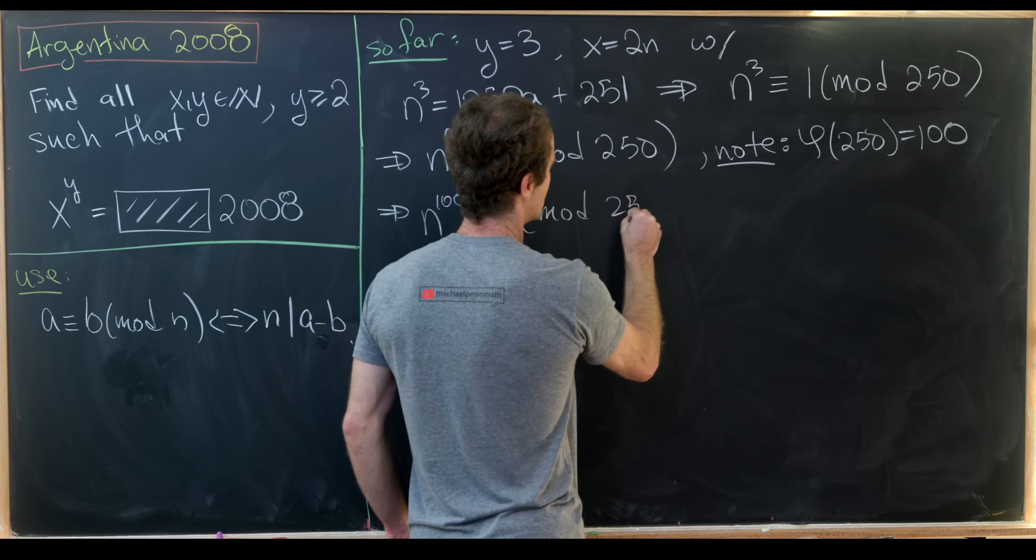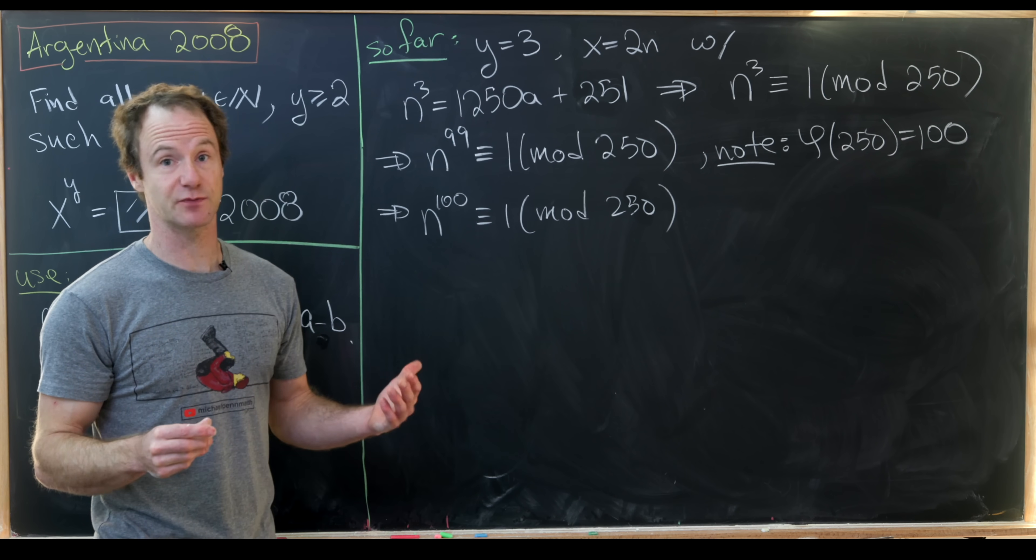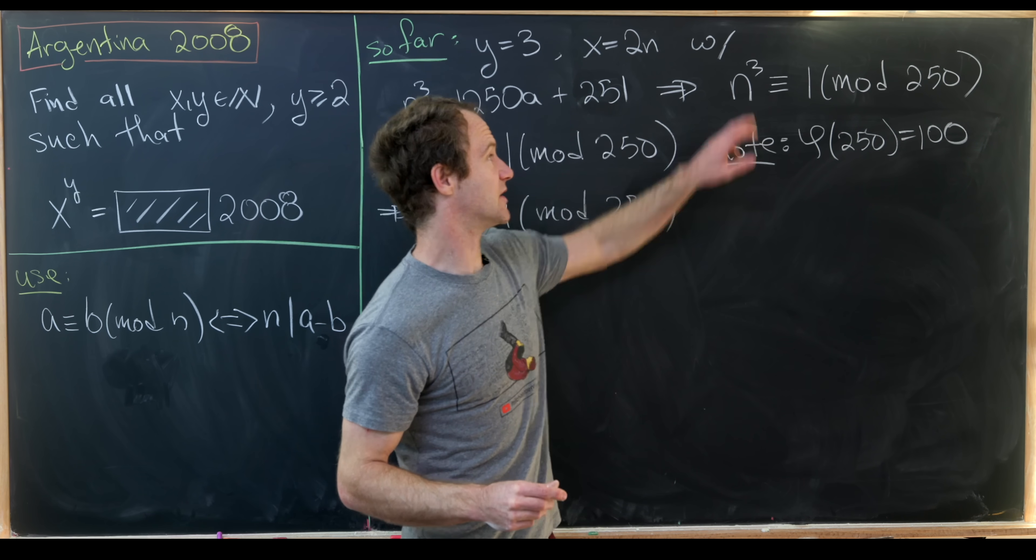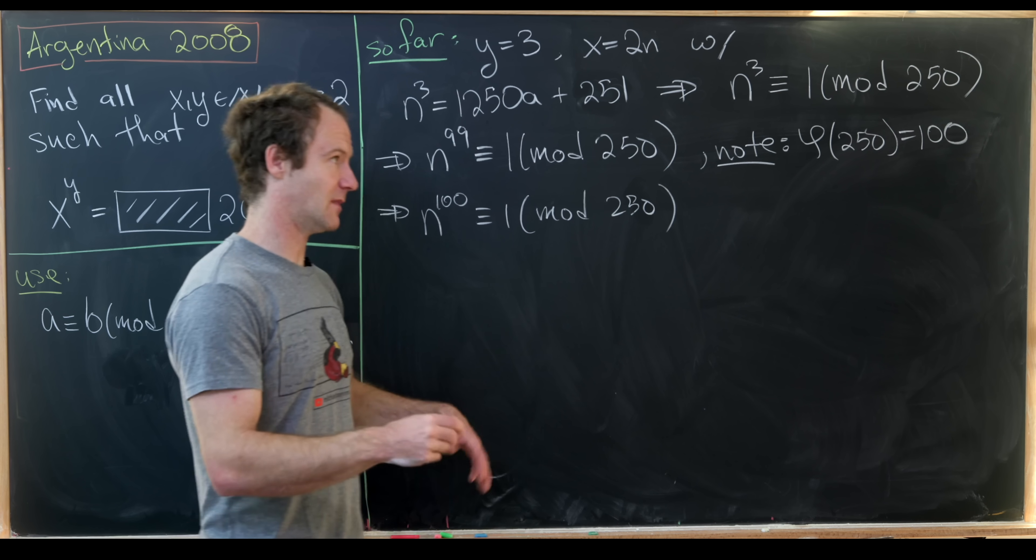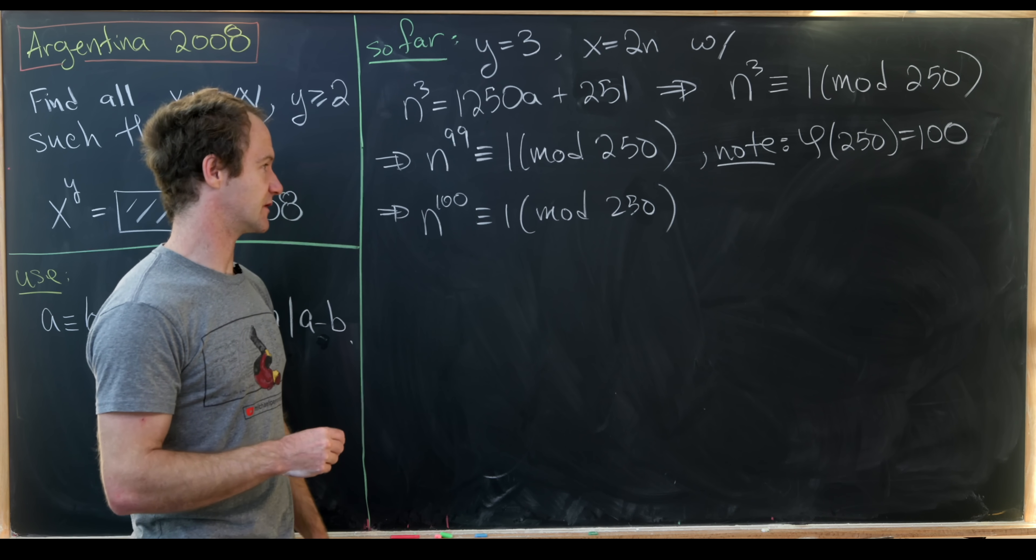Obviously that only works if n and 250 are relatively prime. But we know that they're relatively prime because this up here shows that n is invertible mod 250, which is only possible if it's relatively prime to 250.